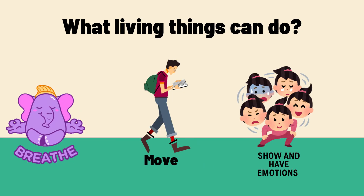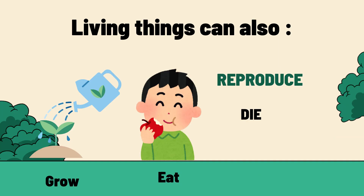Now, what are the things that living things can do? Living things can breathe. They can survive. They can move from one place to another. They can show and have emotions like sadness, happiness, anxiety, fear, and excitement.